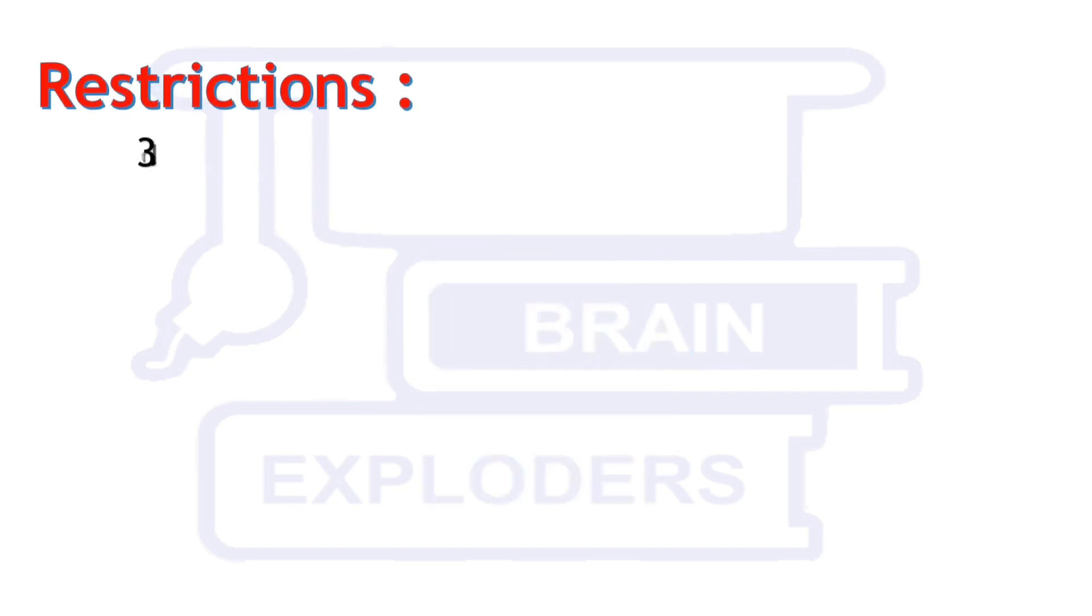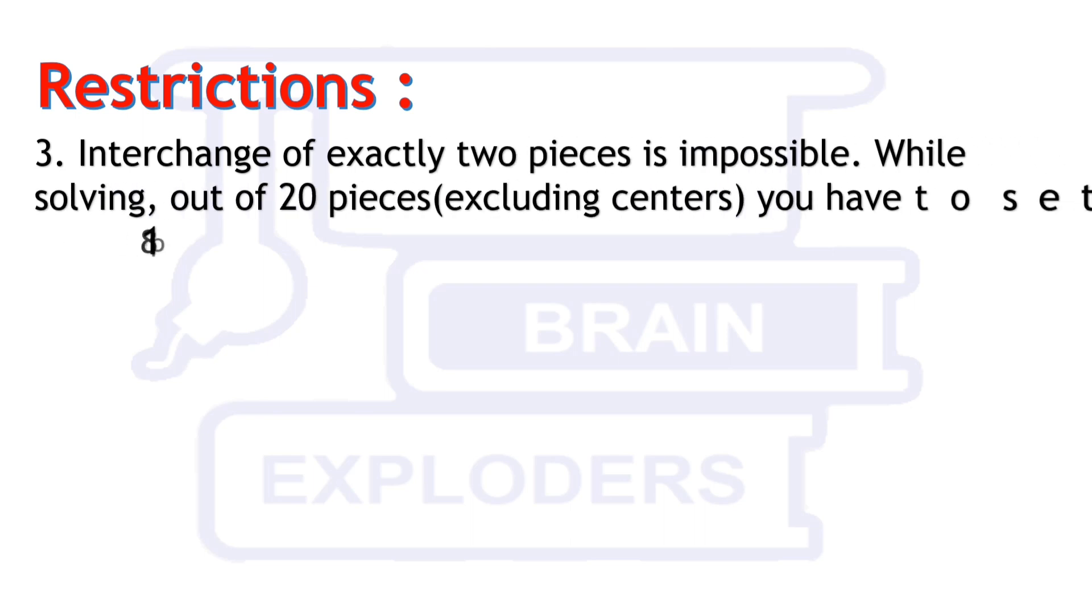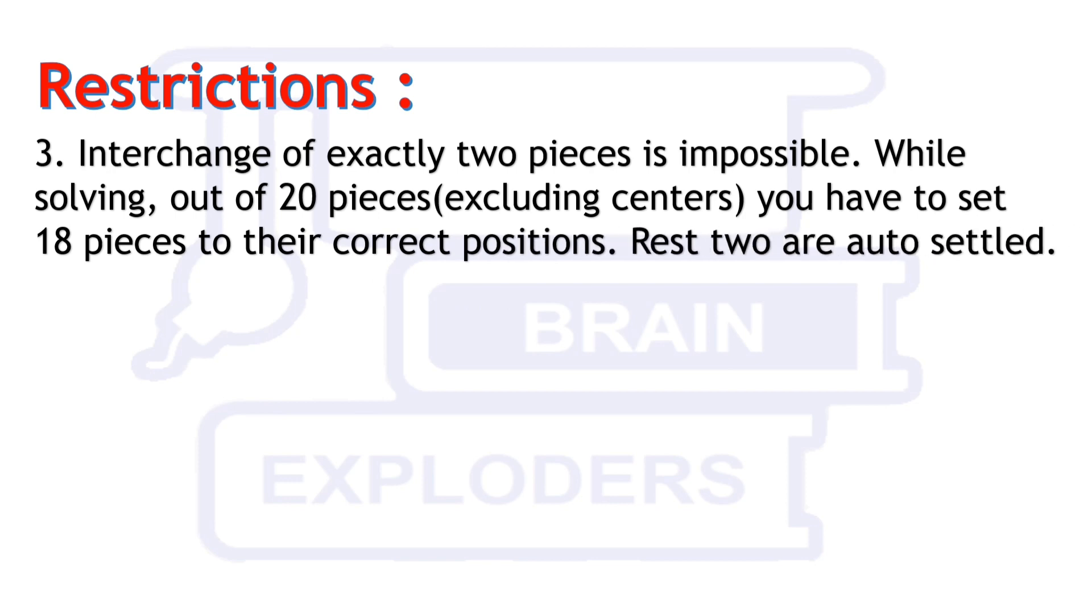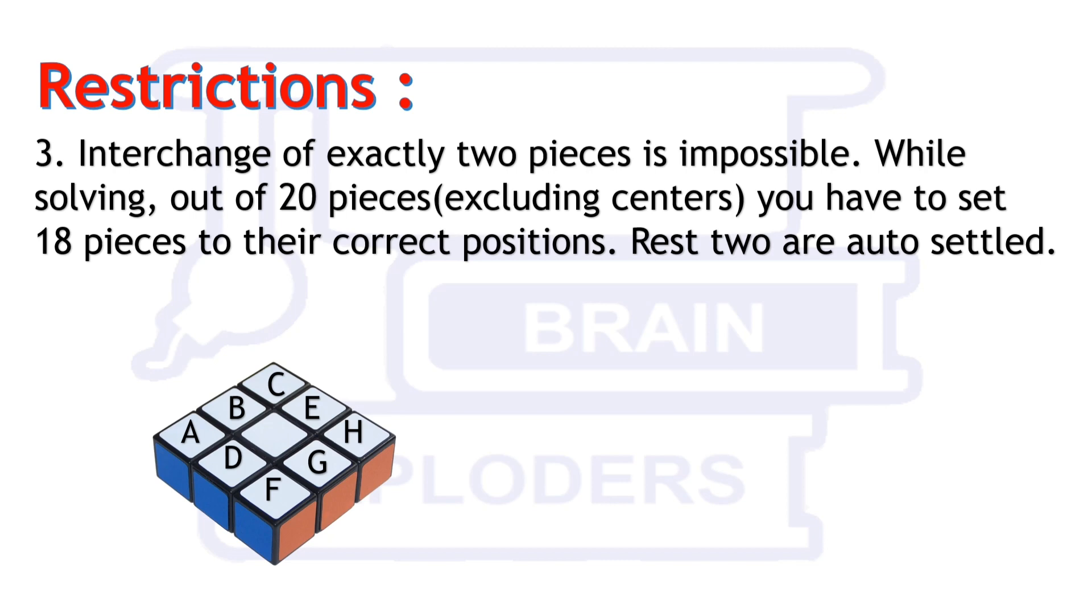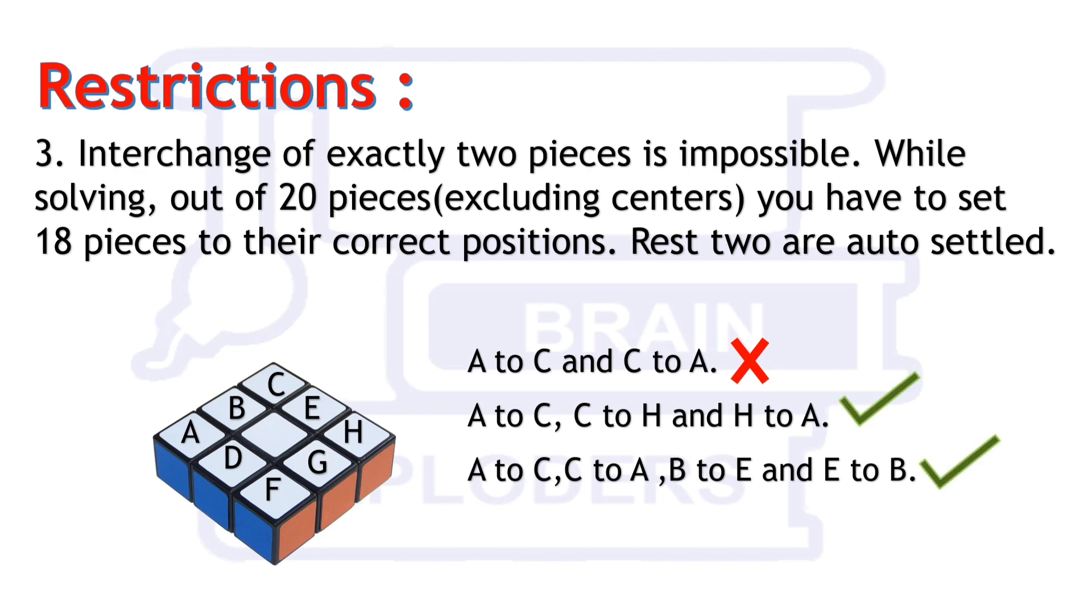Third restriction is that interchange of exactly two pieces is impossible. While solving out of 20 pieces, you have to set 18 pieces to their correct position. Rest two are auto-settled. Suppose this is one of the layers of Rubik's cube and all other layers are settled. Name them A, B, C, D, etc. Now suppose you try to bring A to C and C to A. You try A to C, C to H and H to A. And third try A to C, C to A, B to E and E to B. In these tries, the first one is impossible and the second two are possible because in A to C and C to A, only two pieces are interchanged. But in A to C, C to H and H to A, here three pieces are interchanging in a cycle.